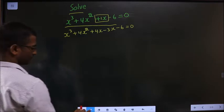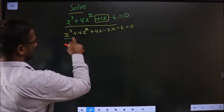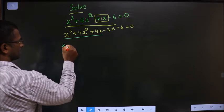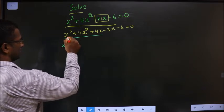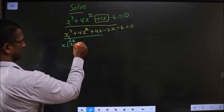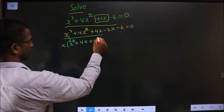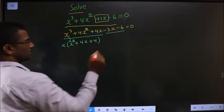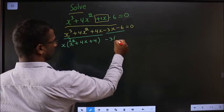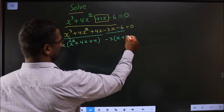Next, from these three what can I take common? x. So what do I get from here? I get x square and here I get 4x plus 4. From these two I will take minus 3 common. So I am left with x plus 2.